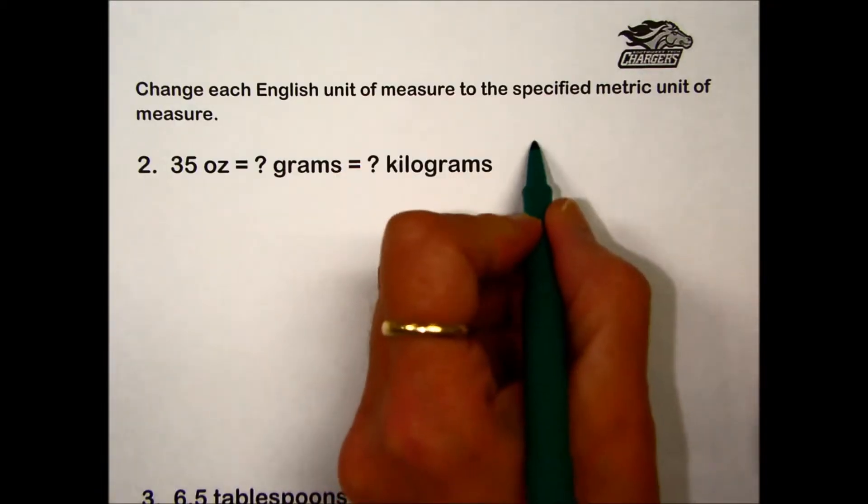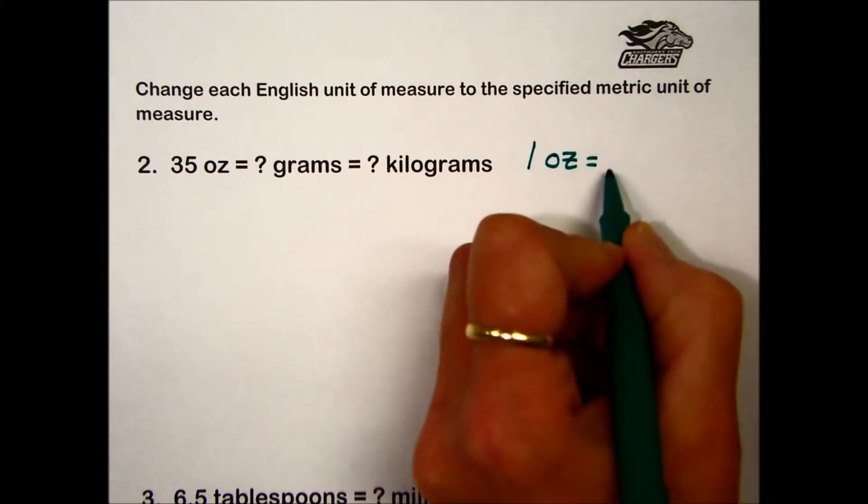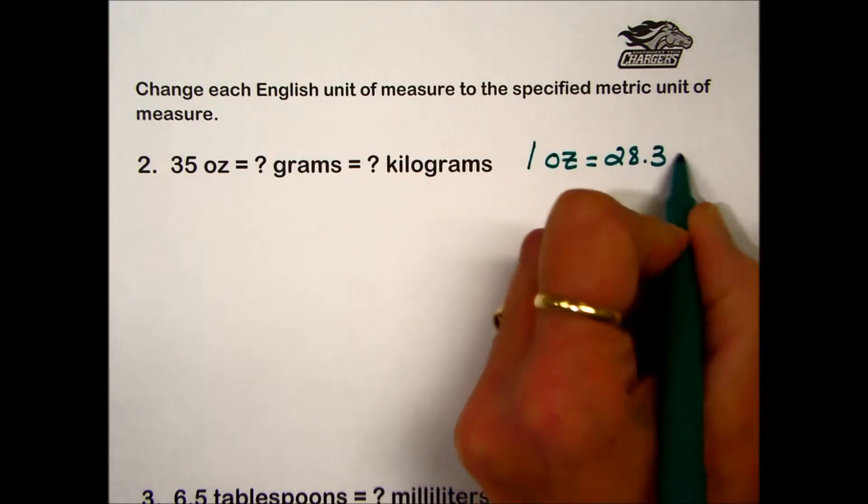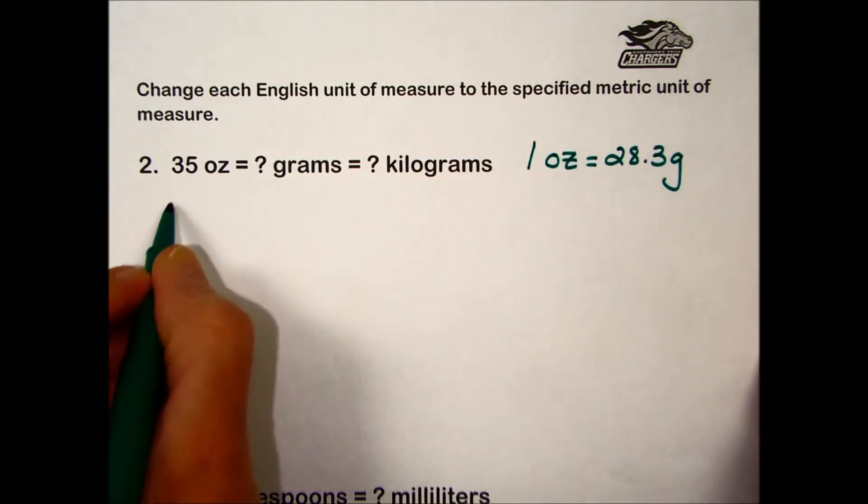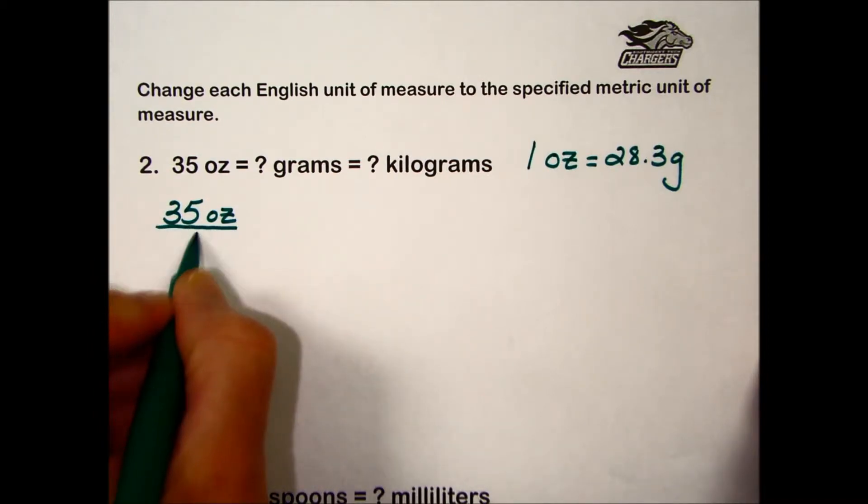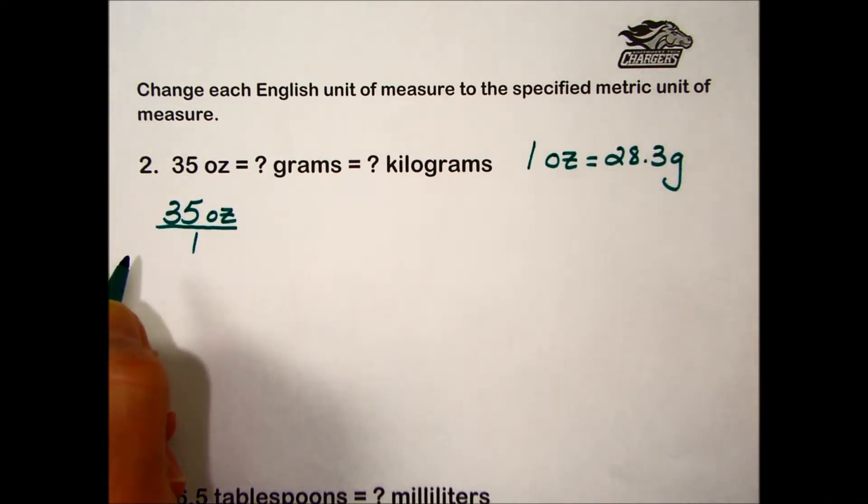What is given is one ounce being equivalent to 28.3 grams. We will start with what is given, 35 ounces, express it as a fraction. In this case we'll have a denominator of one.